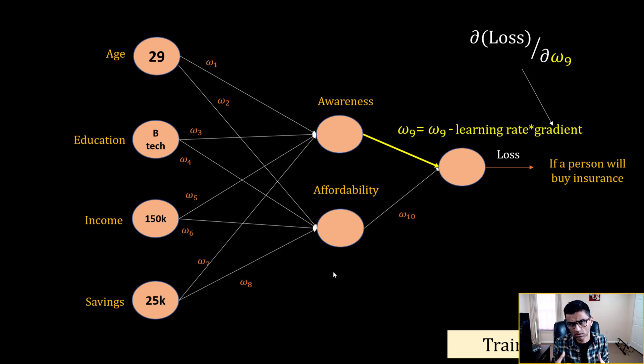So this is a guessing work. You're trying to optimize your loss or minimize your loss and you want to see how much w9 is changed so that results into a certain amount of change in loss so that you can reduce that loss. So you can think of this as how much awareness contributes to the final output. Let's say awareness contributes only 20 percent to the final output, affordability contributes 80 percent. Then this w9 gradient will be less here.